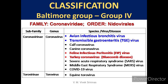Classification: The Coronaviridae family is classified under Baltimore Group 4 with the order Nidovirales. The order Nidovirales is named from the Latin 'nidos', meaning nest, as all viruses in this order produce a nested set of subgenomic mRNAs during replication.